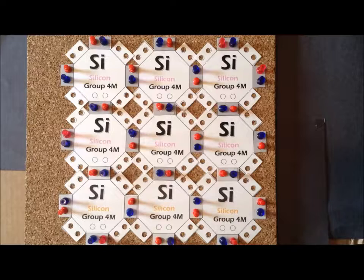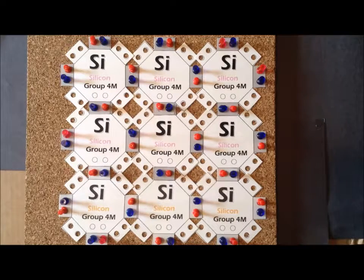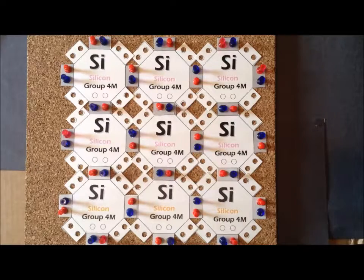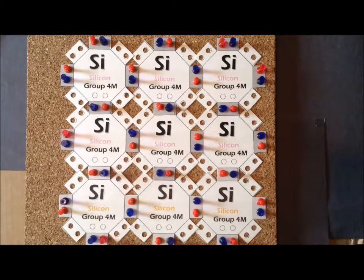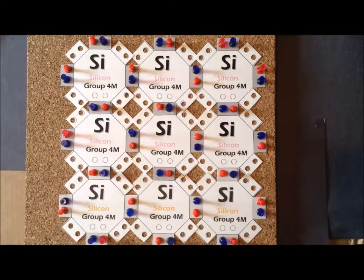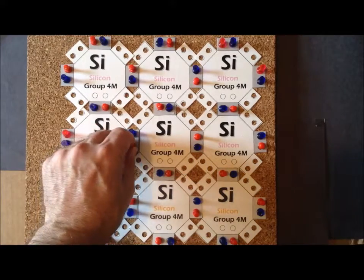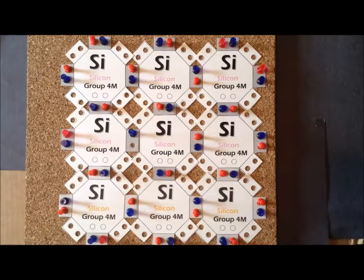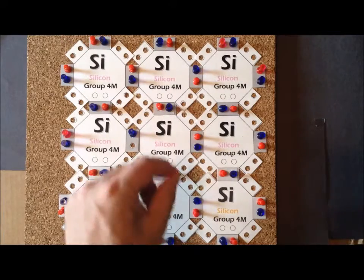Now in a semiconductor, it is possible to excite one or more electrons from the valence band—the set of all the bonding orbitals colored in gray on our diagram—and have it move into the conduction band, whereby the electron is free to move throughout the crystal.